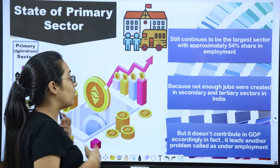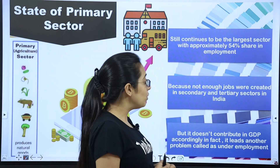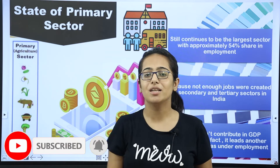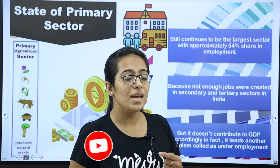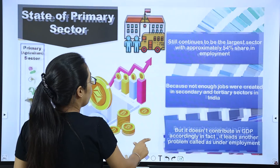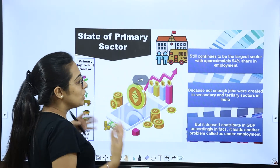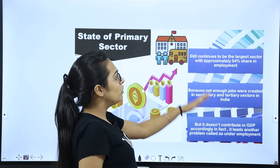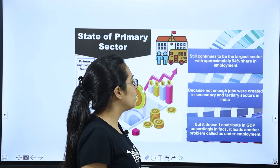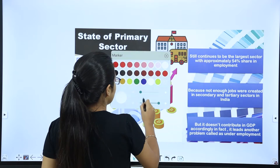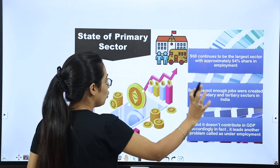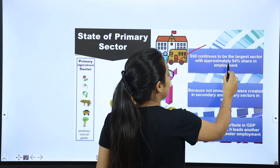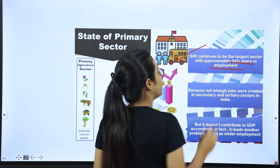What is the development of the primary sector? The primary sector is also known as the Agriculture Sector. What is its contribution in our economy and how is it included in the GDP? It continues to be the largest sector, with approximately 54% of the employment share still belonging to the primary sector.